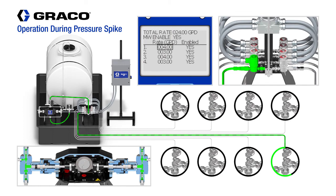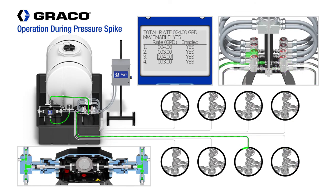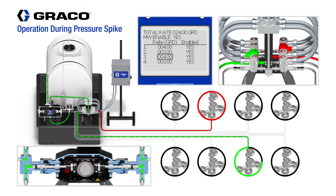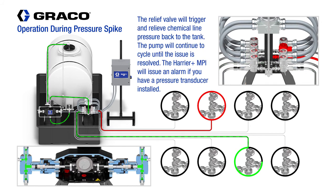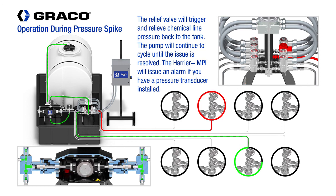Lastly, we will take a look at what happens if you get a pressure spike in one of the injection lines. In this example, we show a pressure spike in injection line number 6. The pressure relief valve will open, relieving pressure back to the chemical tank. The Harrier Plus MPI controller will recognize that and send an alarm. The pump will continue to cycle, skipping injection line number 6 until the issue is resolved.